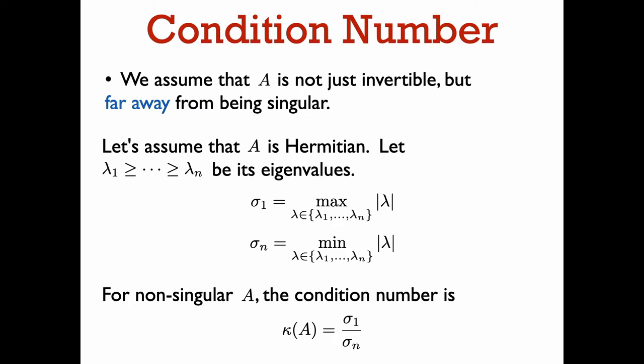We additionally assume that the input matrix A is Hermitian, so all of its eigenvalues will be real. Since A is invertible, it has no zero eigenvalues. We sort the eigenvalues by their absolute value from largest to smallest. Let sigma_i be the absolute value of the ith eigenvalue in this sorted list, so sigma_1 is the spectral norm and sigma_n is the smallest absolute eigenvalue. The condition number of A is the ratio of sigma_1 to sigma_n.